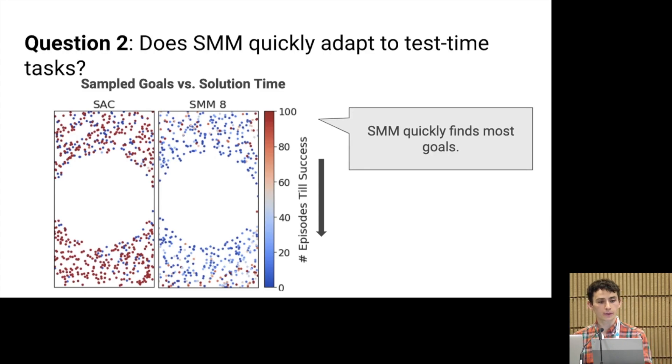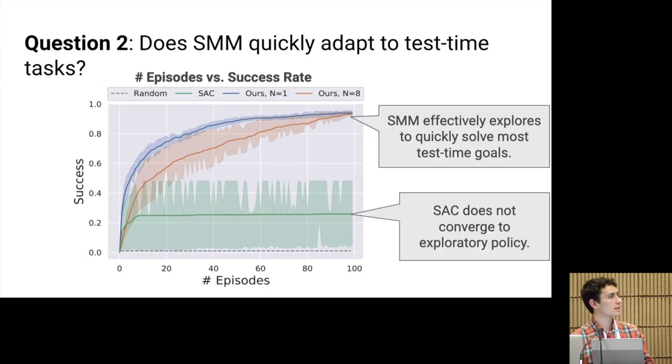To gain some more intuition for the method, we can plot the success throughout the testing phase. And we observe that the baseline, shown in green, fails to solve a large portion of the tasks, whereas our method, shown in blue, can quickly adapt within about 100 episodes to solve tasks specified at test time.